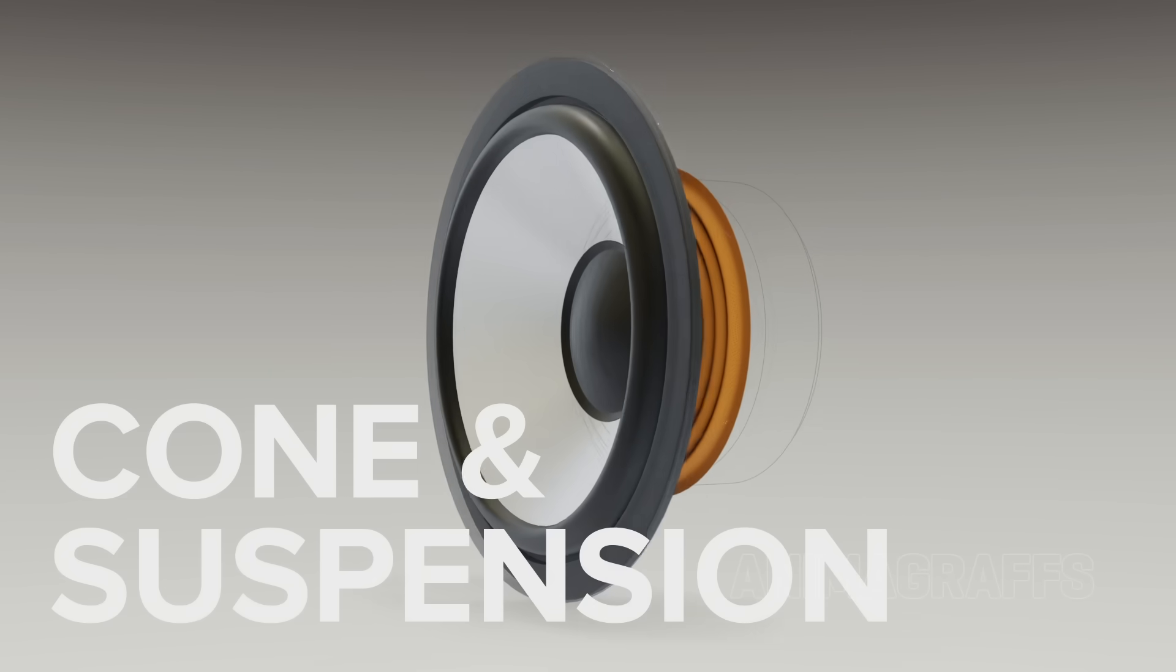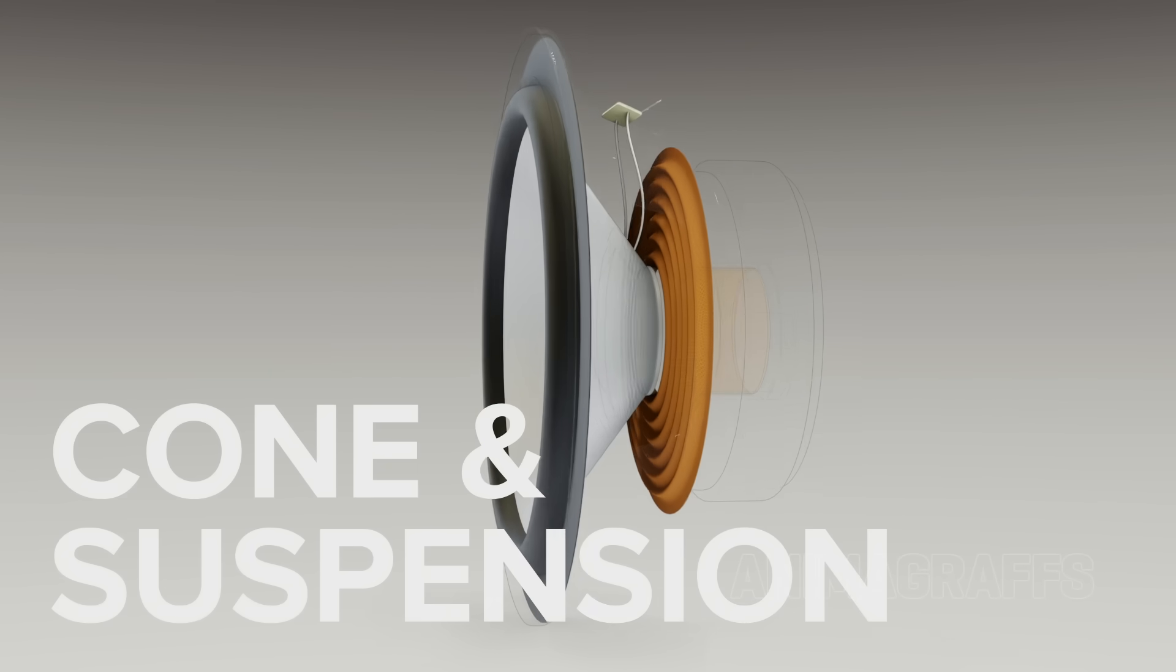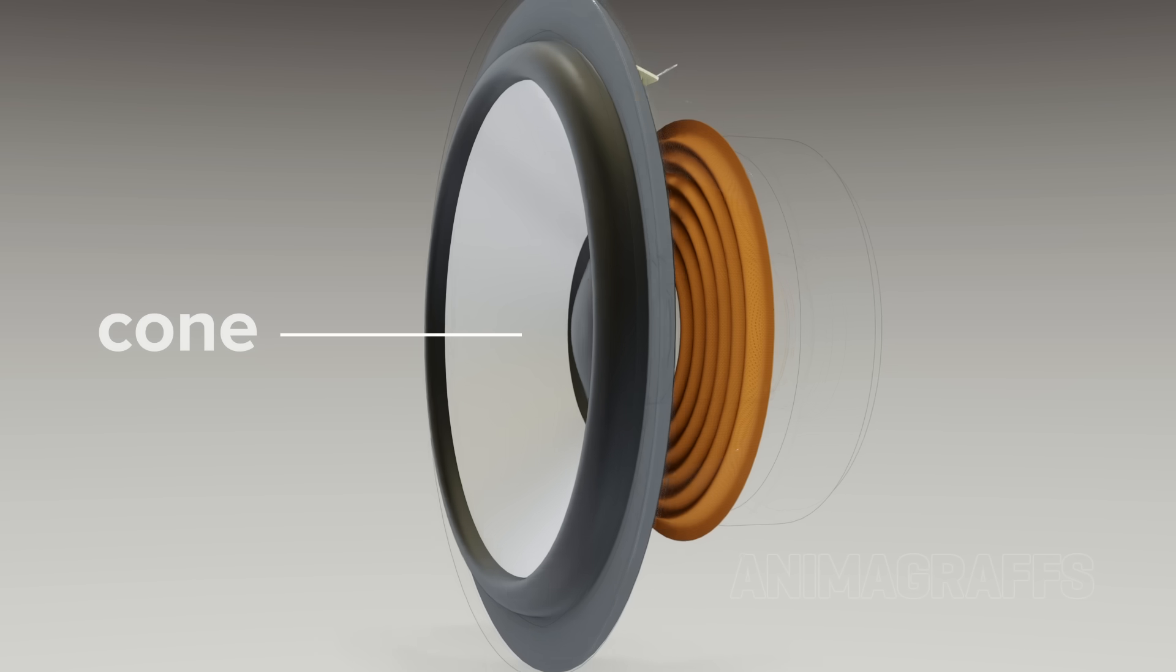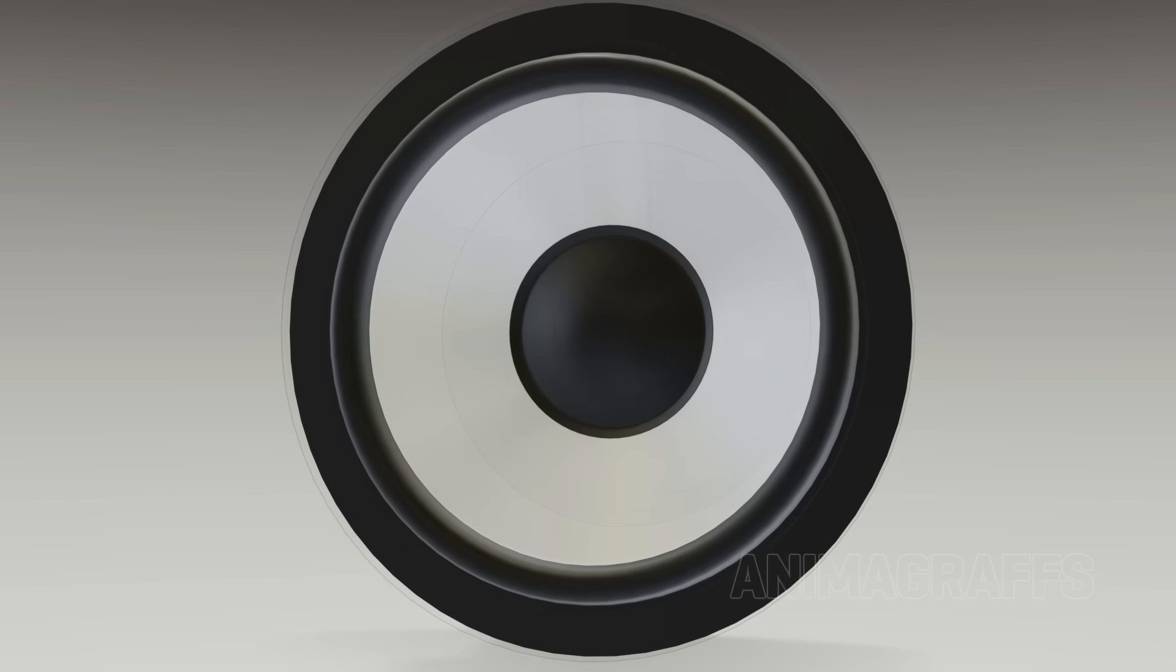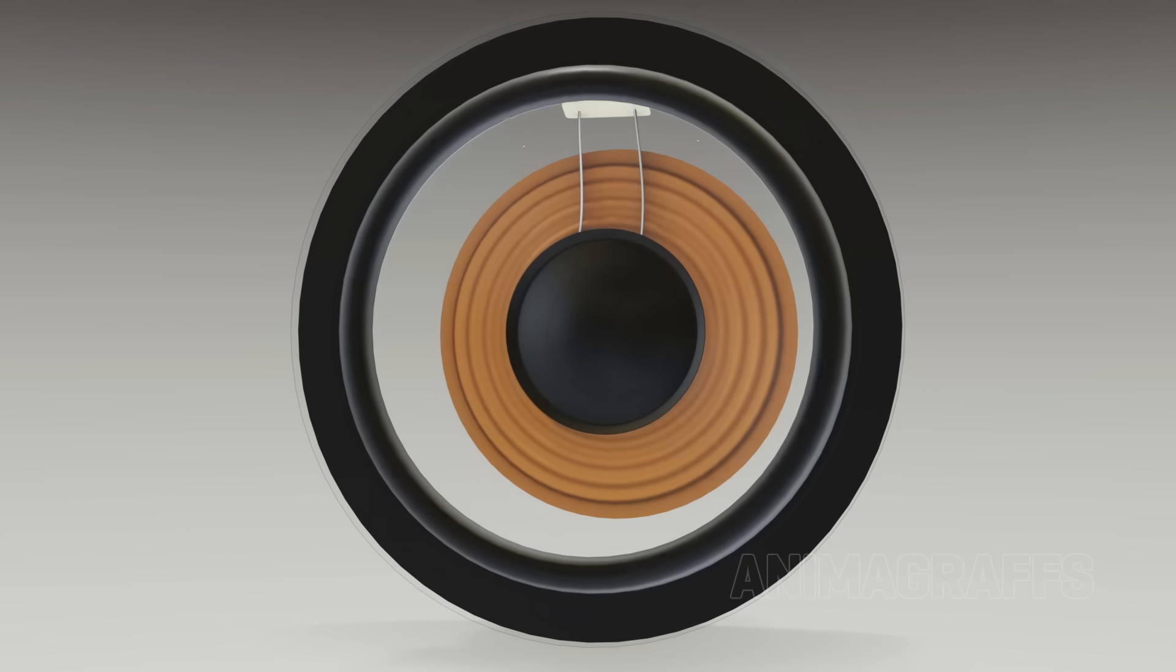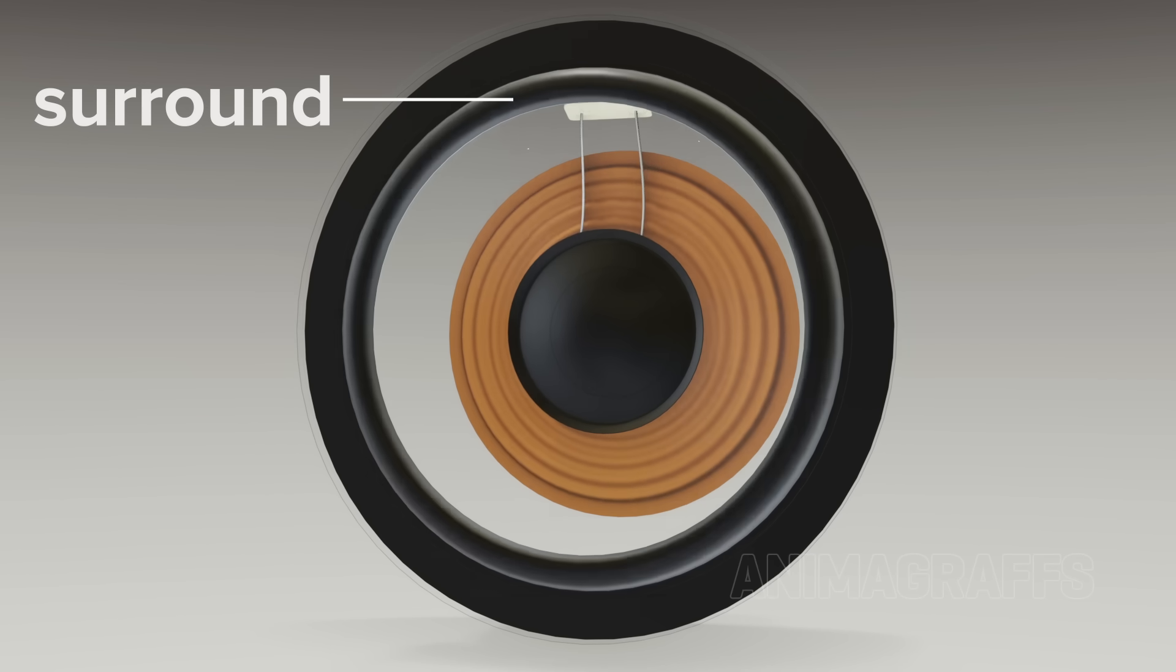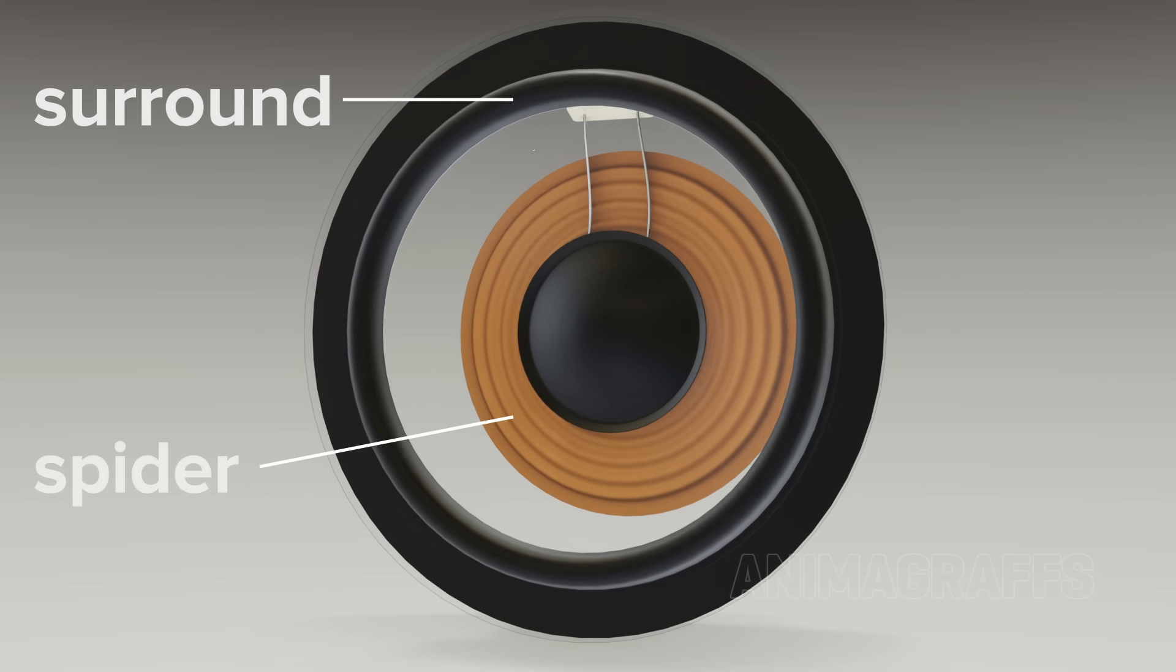The Cone and Suspension. The cone translates voice coil movement into waves that travel through the air. It has its own flexible suspension system, made up of the surround on the outside and the corrugated spider at its center.